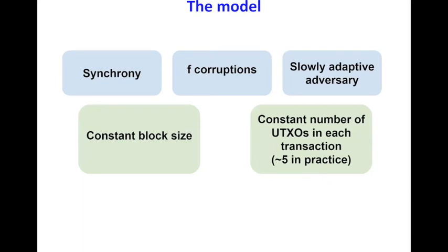Before we move to the core of the paper, I will introduce some further assumptions needed for our model. The first is that we assume a constant block size, which is in sync with all existing blockchains and sharding systems. The second is that we assume each transaction has a constant average size, meaning the number of inputs and outputs are on average a small constant number. This is a reasonable assumption given that in most cases, like Bitcoin, the size of each transaction is approximately five.